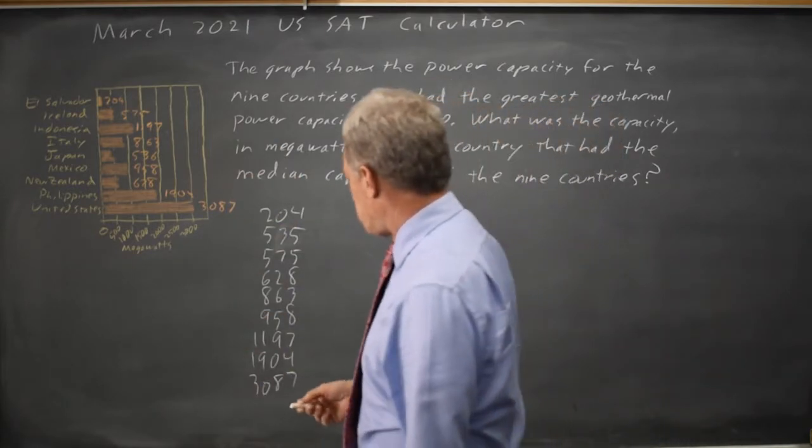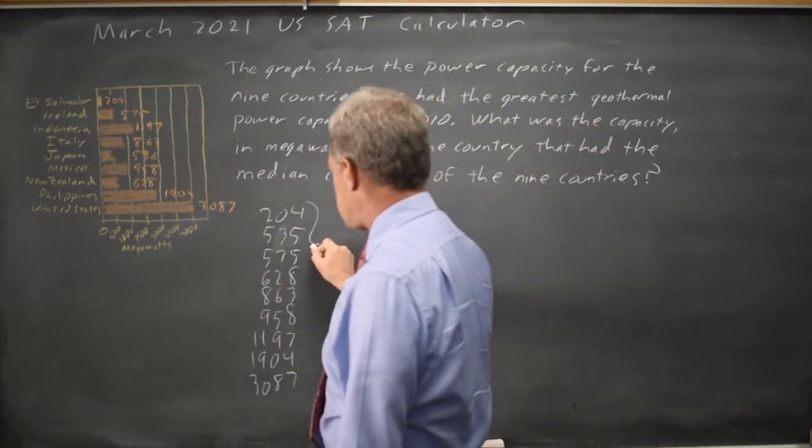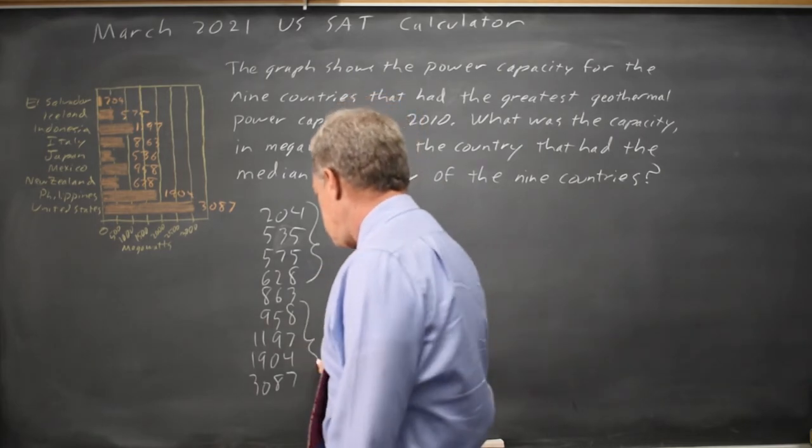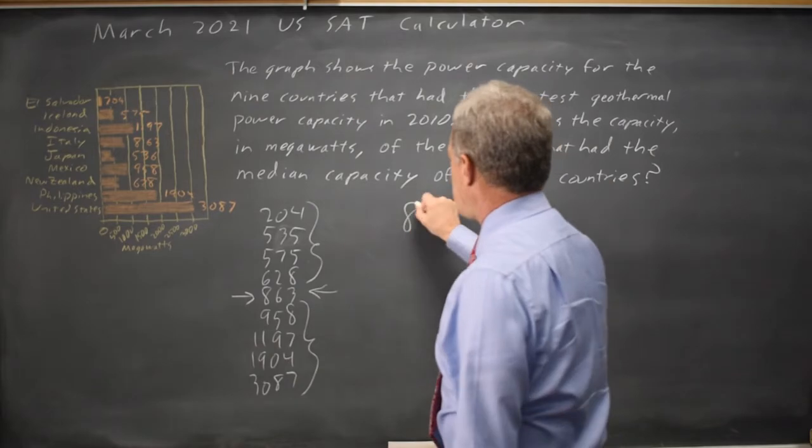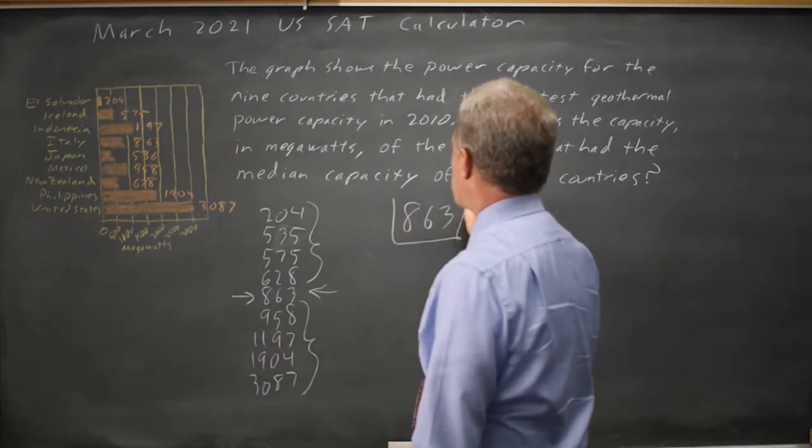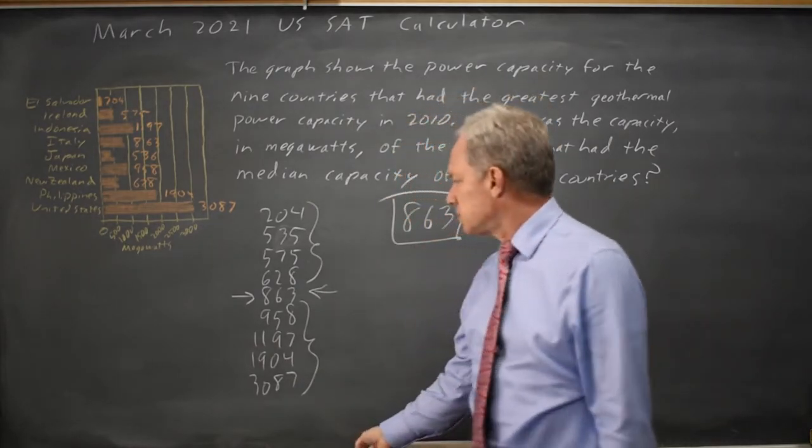Now the median is the middle number, smallest to largest, so these are the four smallest, these are the four largest, and the median is 863 because there are four values smaller and four values larger.